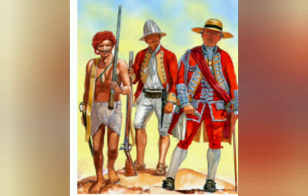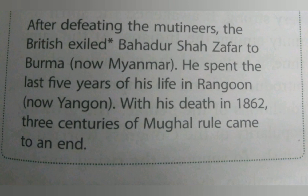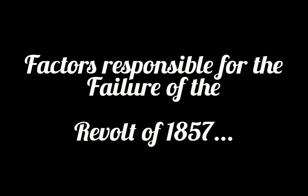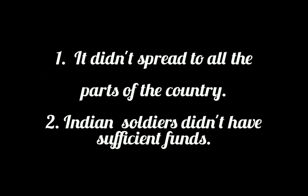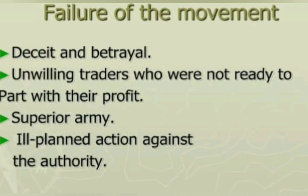The British suppressed the First War of Independence and the people of India lost this war. Bahadur Shah Zafar was exiled — he spent the last five years of his life in Rangoon and died in 1862. There were many factors responsible for the failure: the revolt didn't spread to all parts of India; Indian soldiers did not have sufficient money or good weapons as they had been exploited by the British; the revolt was not organized properly. On the other hand, the British soldiers were well equipped with modern weapons and were very well organized.